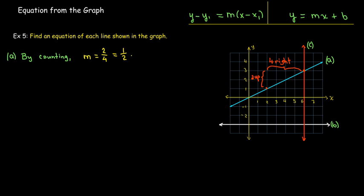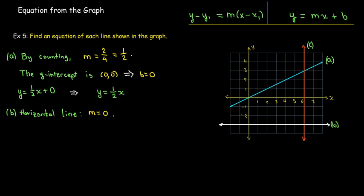And then I can see here that the intercept intersects the origin, which means the y-intercept is (0, 0). And so using the slope-intercept form, I would get b equals 0. So y equals 1/2 x plus 0, or just simply y equals 1/2 x.